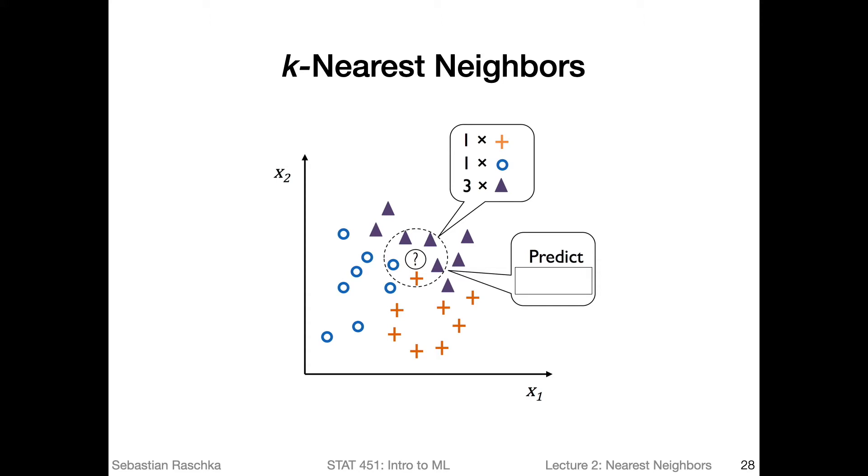Here I'm showing you an example of a k-nearest neighbors model. Again, we have our two favorite features x1 and x2, arbitrary features and a toy dataset here just to have it easy to visualize. Like so often, we want to classify a data point. In this case, it's the question mark here in the center again. What we do is we consider these data points in this radius here, let's say using a Euclidean distance measure.